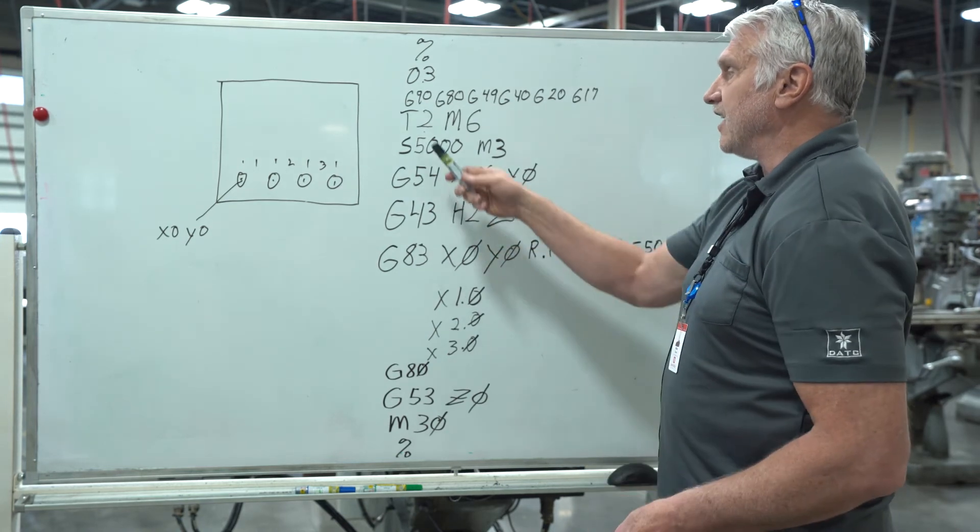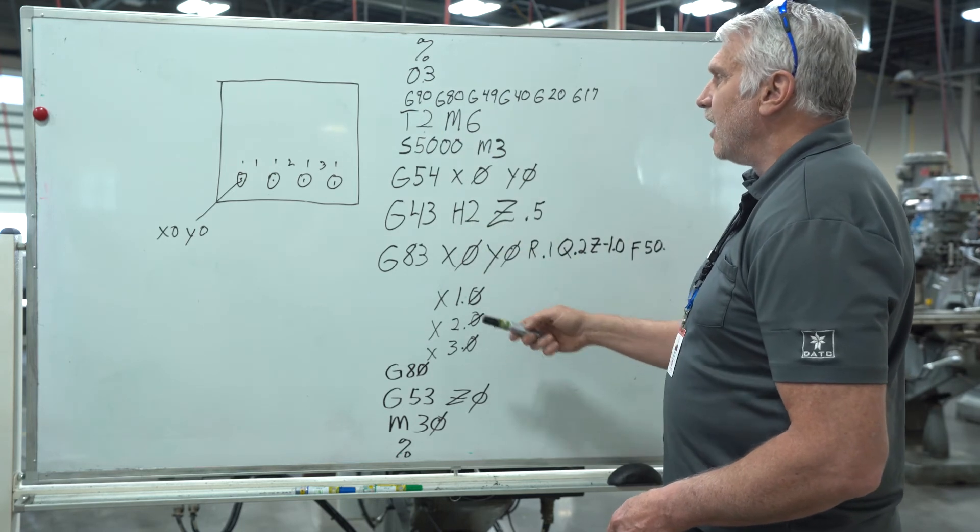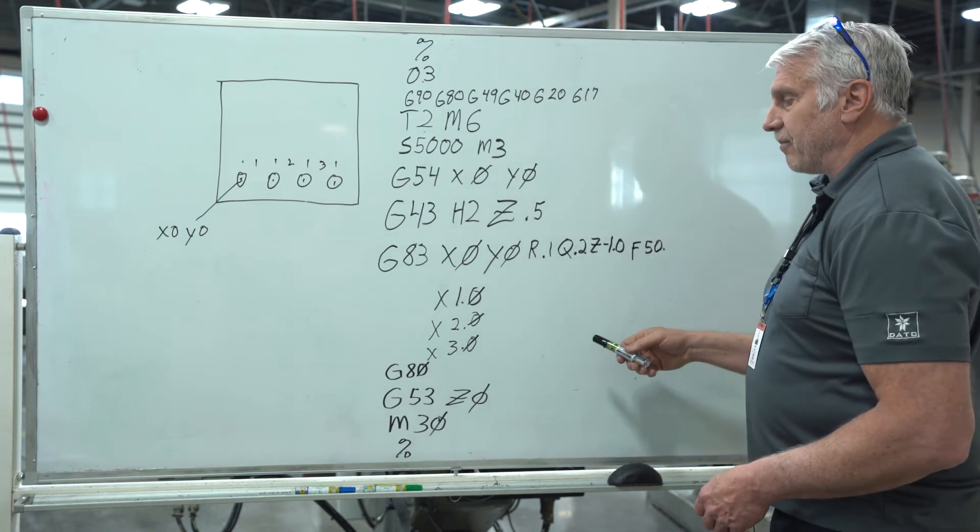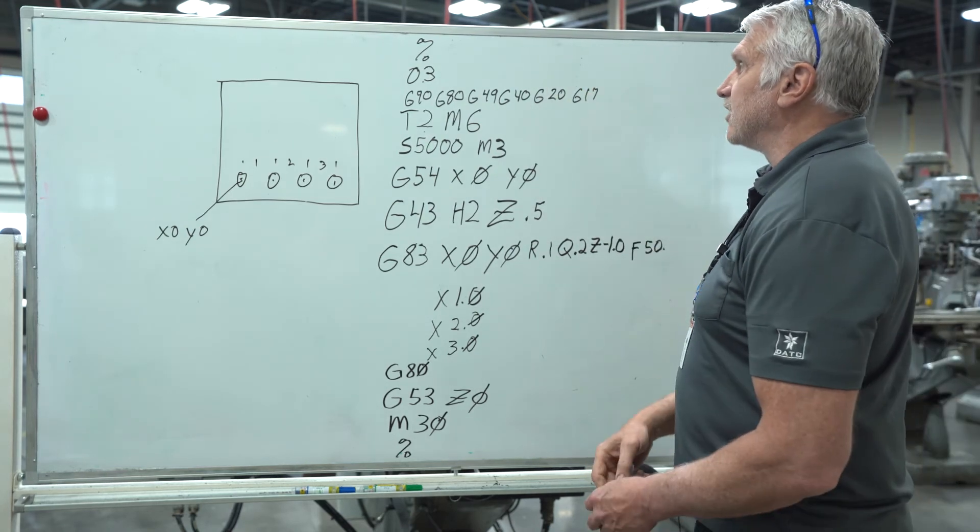So we've changed the T, the H, the spindle speed, a Q value, and a Z depth. Everything else is pretty much the same.